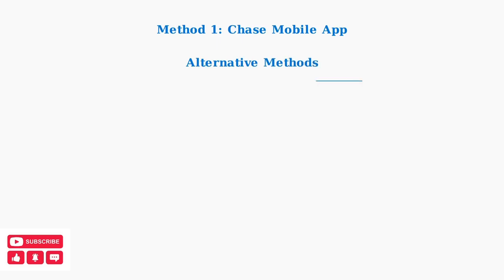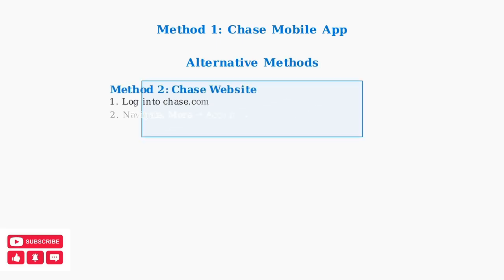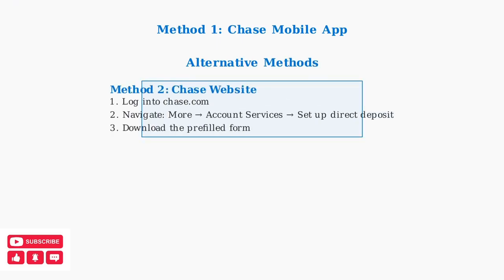If the mobile app isn't available, you can use the Chase website with the same navigation steps. Simply log in to Chase.com and follow the same path through account services.